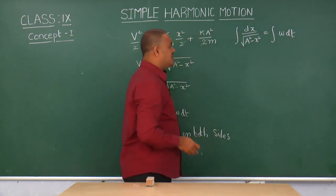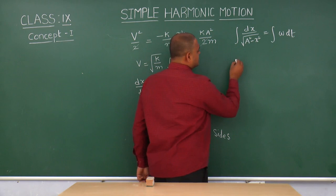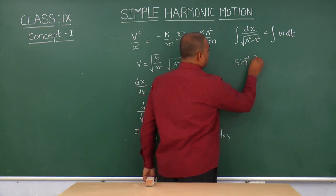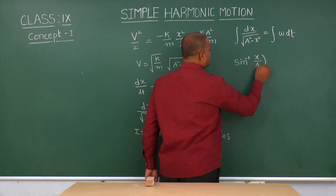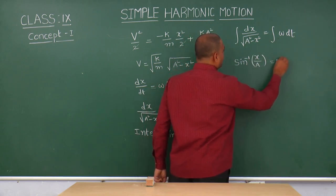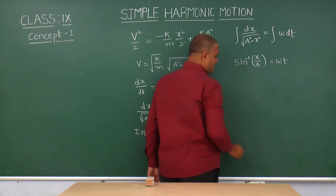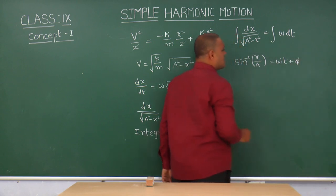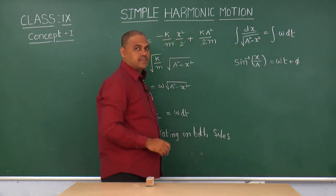So from mathematics, this can be written as sine inverse x by a is equal to, omega is a constant term, integral dt means t plus phi. It is a constant.